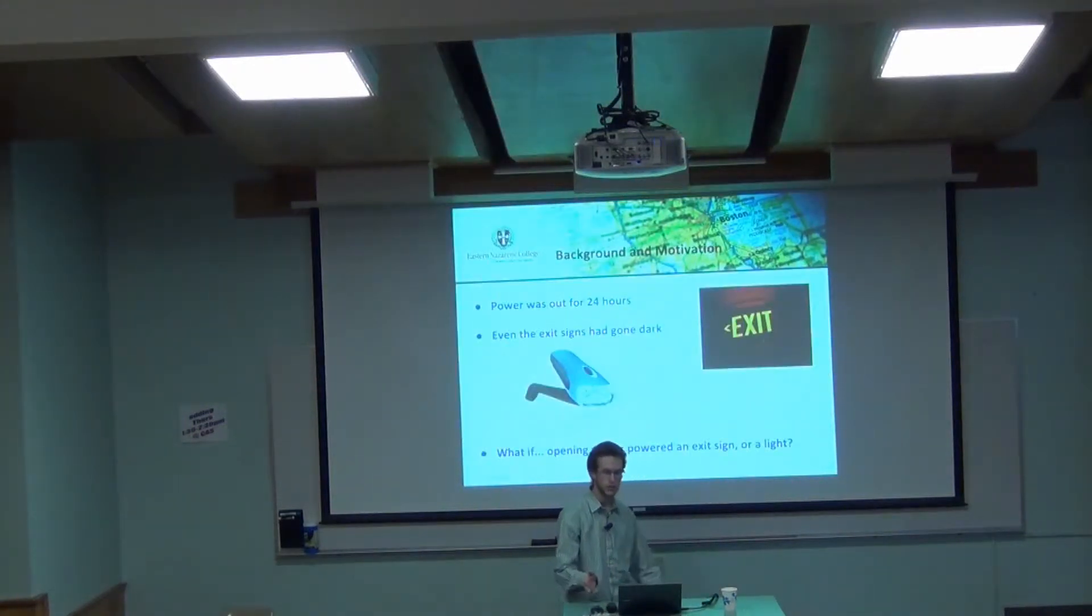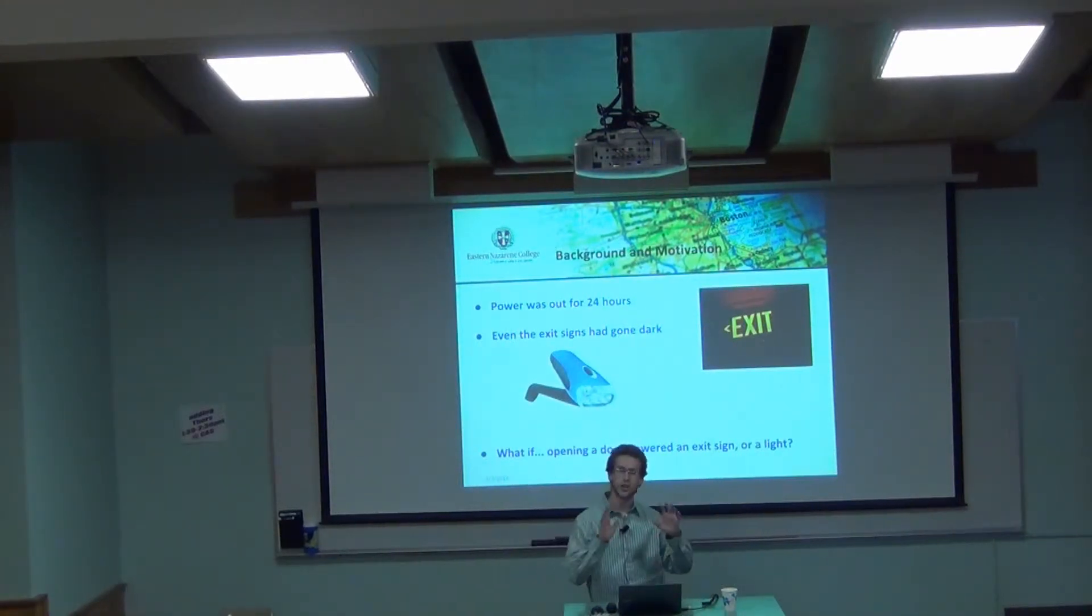So while the power was out, these exit signs, like the one you see there and here, are powered by batteries. Well after 24 hours these were all dark. So you're walking around campus and even inside all of the lights are out, because all of the batteries have died.